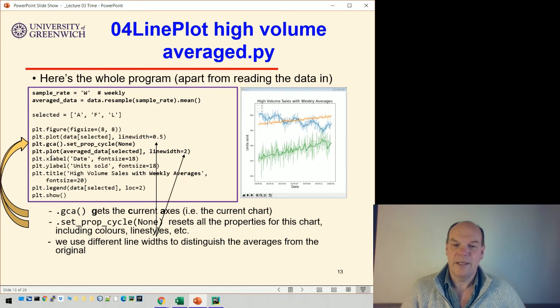But it's much clearer by looking at the stronger lines - the average data - where the trends are. You can see the peaks and troughs in the A product, the very straight trend of product F, and the steeper but not quite so straight trend of product L.